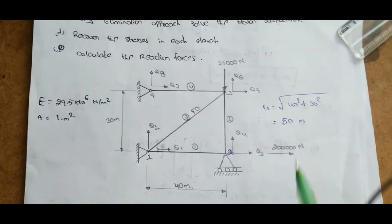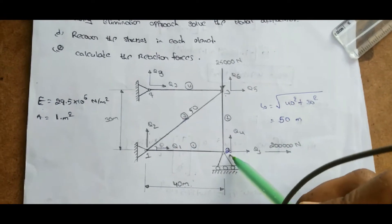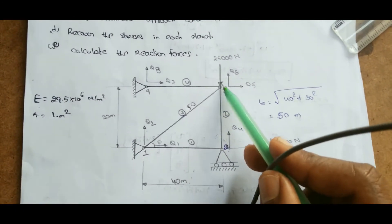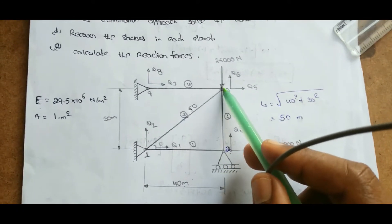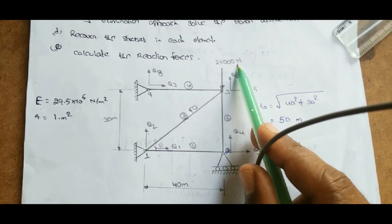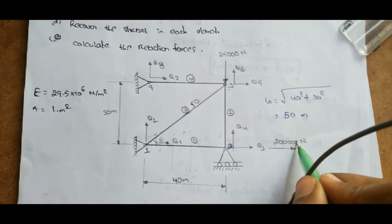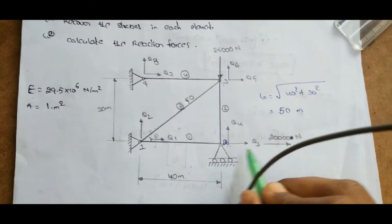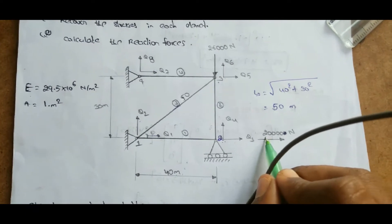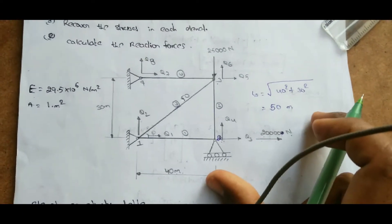Young's modulus E is equal to 29.5 × 10⁶ N/m² and the area is 1 m². In this diagram there are two point loads acting at node 2 and node 3. The load acting downwards is 25,000 Newtons. At node 2 there is also a horizontal direction force of 20,000 Newtons. This is the given figure.